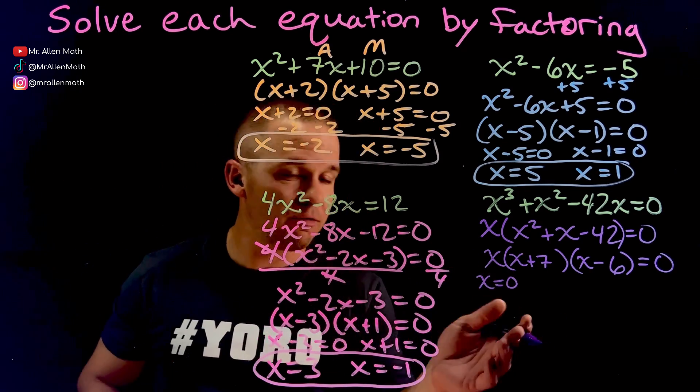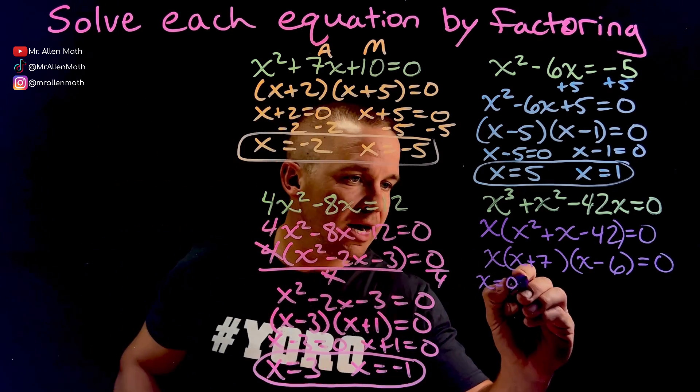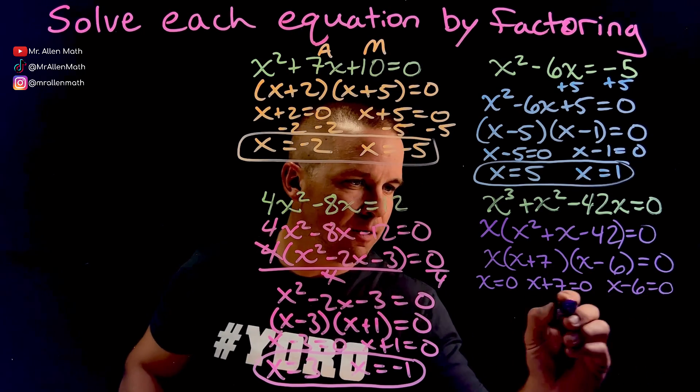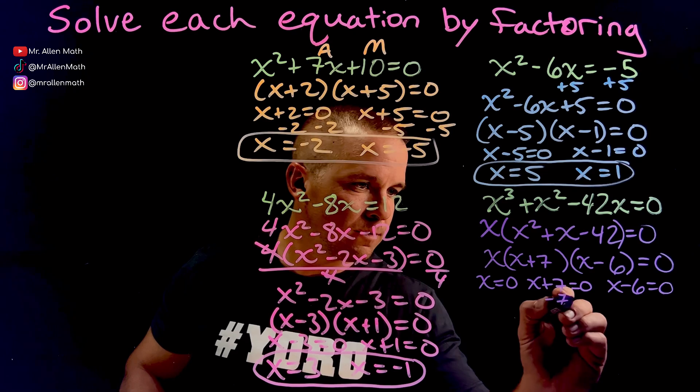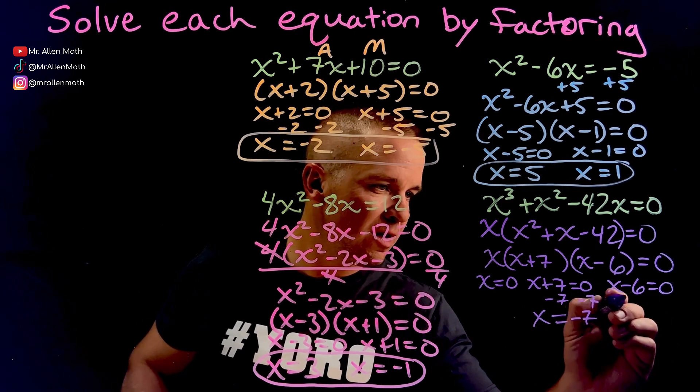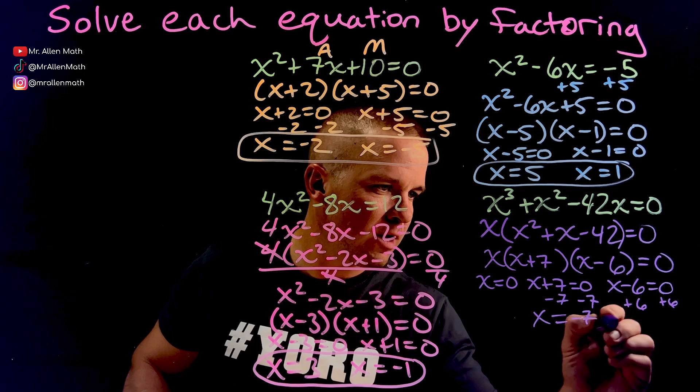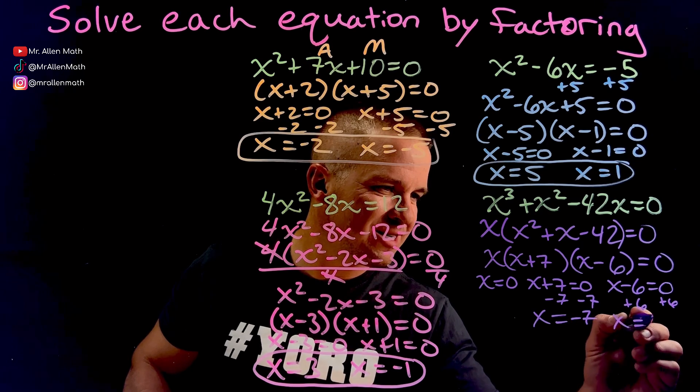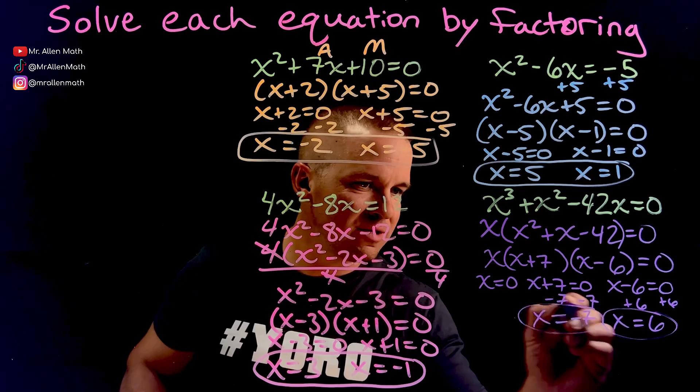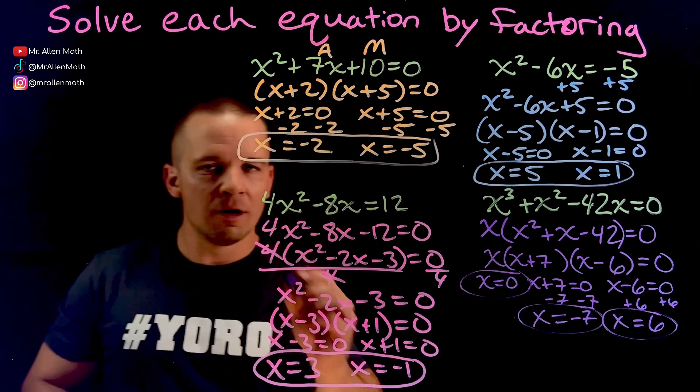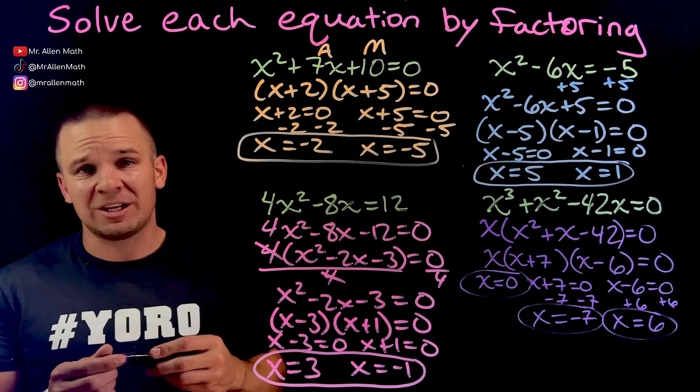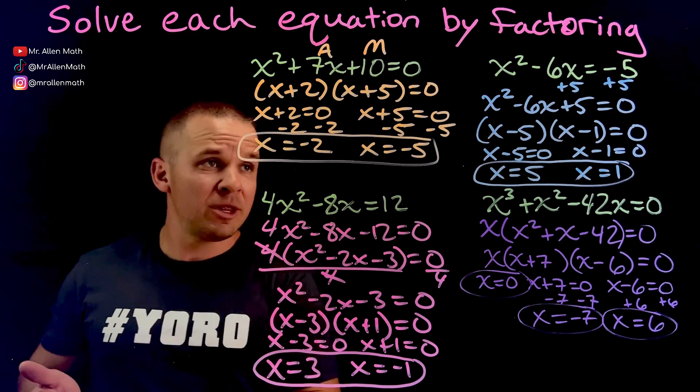So I'm going to have X equals 0. That one's done. I got X plus 7 equals 0 and X minus 6 equals 0. So I'll subtract 7 and I get X equals negative 7. Add 6 and I get X equals 6. So we've got negative 7, positive 6, 0, one squeaky marker, but I wanted to use the purple. The purple looks pretty dope. I wish it came in a non-squeak format. But there we go, guys.